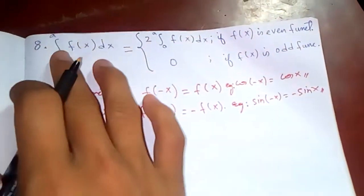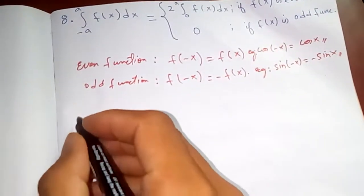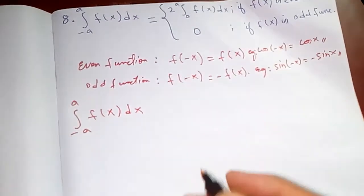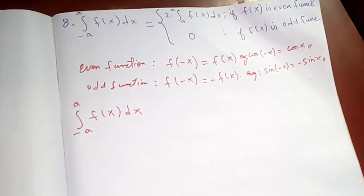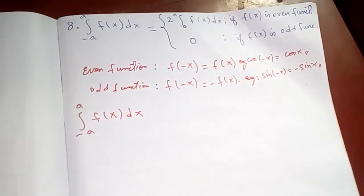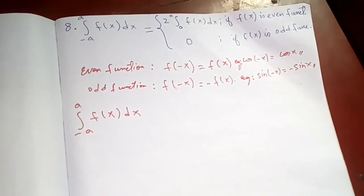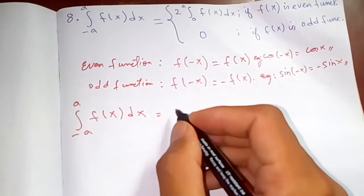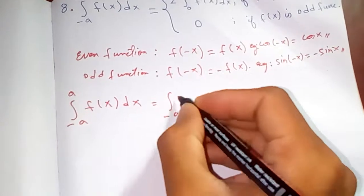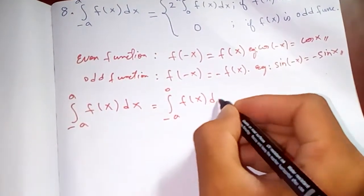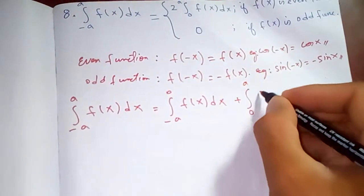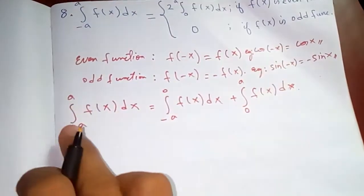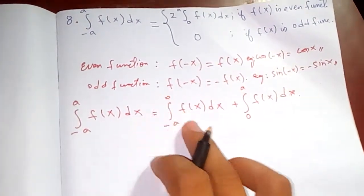Now let's evaluate the integral from minus a to a of f(x) dx. We'll use property number three, which allows us to split this as the integral from minus a to 0 of f(x) dx plus the integral from 0 to a of f(x) dx.